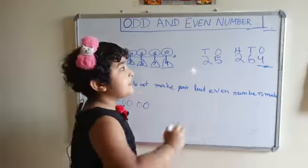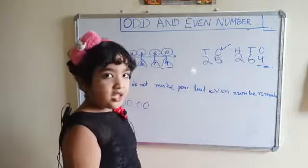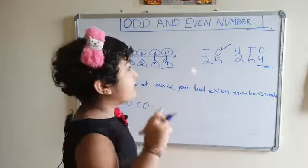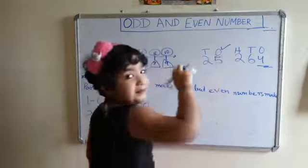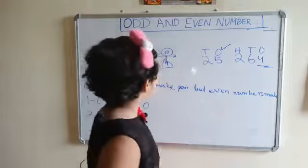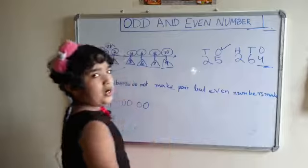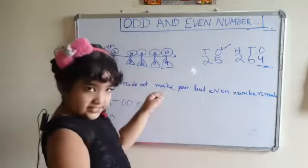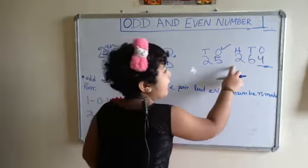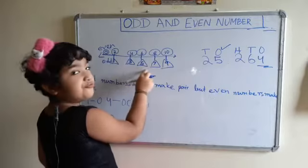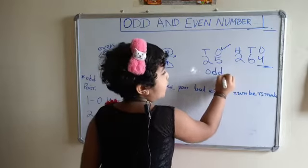For example, the number is 25. How do we know? We look at the ones place — the ones digit is 5, and 5 is an odd number. So 25 is an odd number.